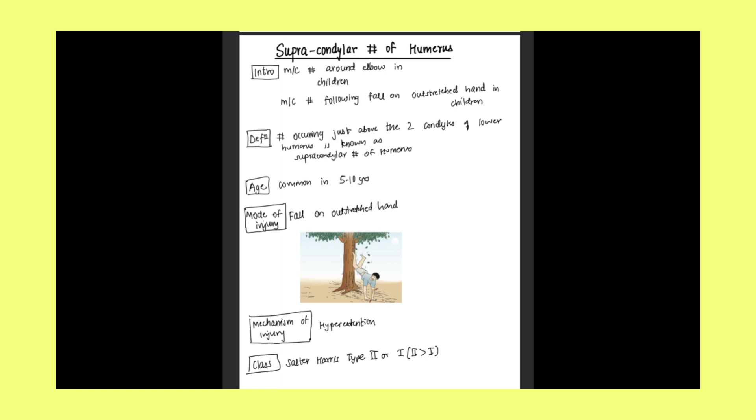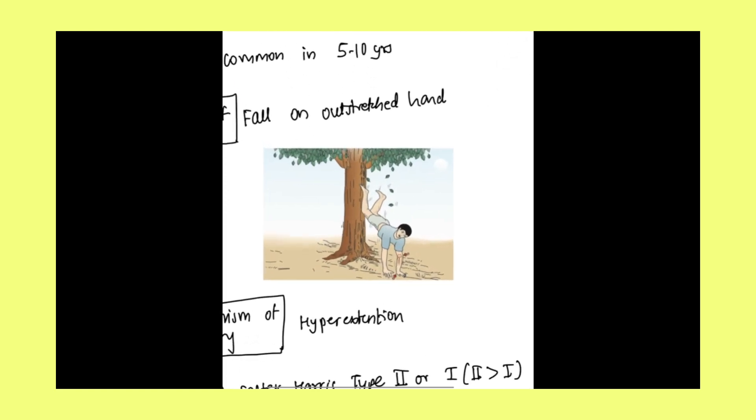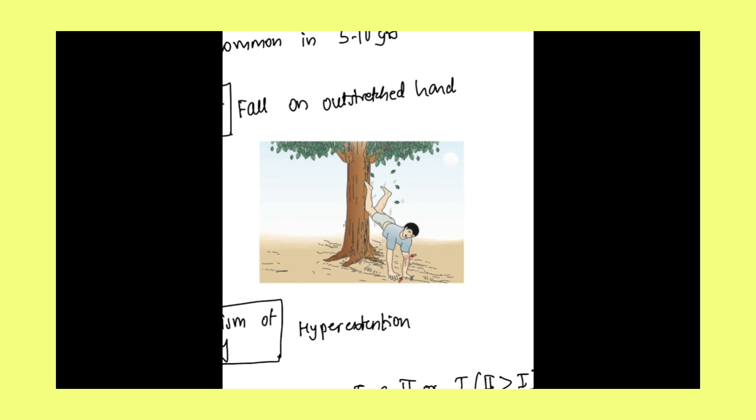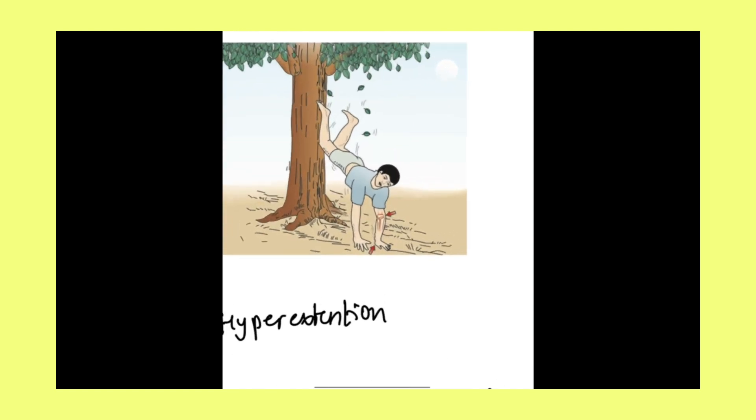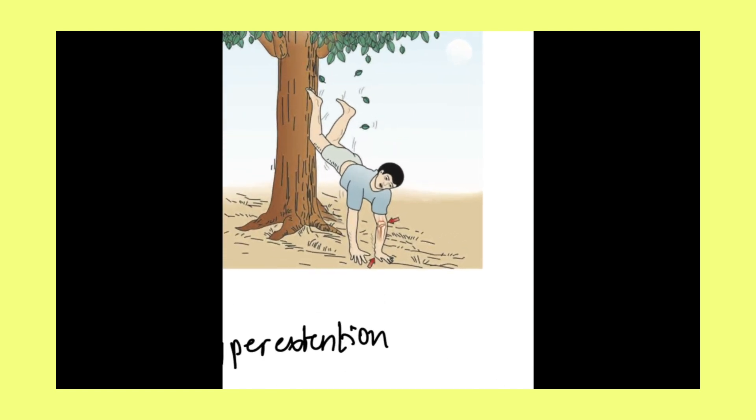The age group in which it is common is 5 to 10 years of age. What is the mode of injury? It is fall on an outstretched hand. As you can clearly see, the hand is outstretched. What is the mechanism of injury? Hyperextension is the mechanism of injury. You can see in this image clearly that the hand is hyperextended.